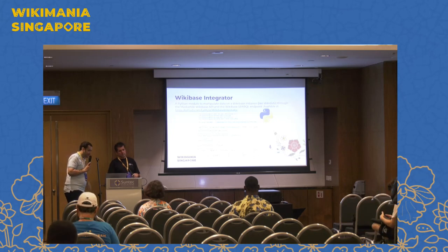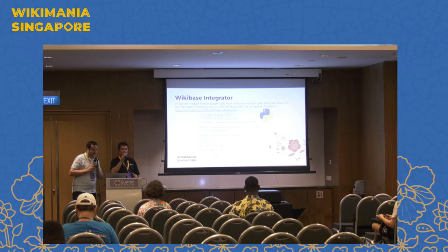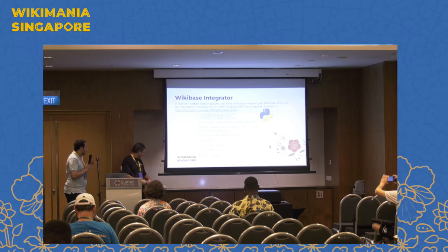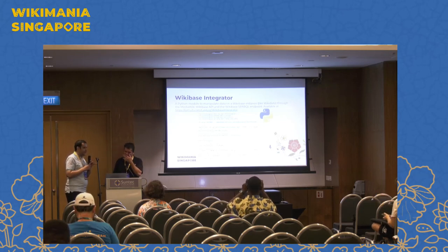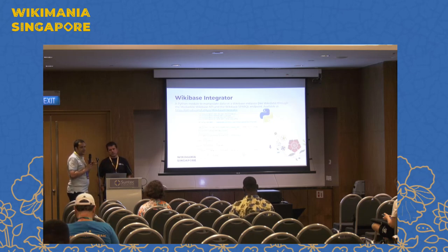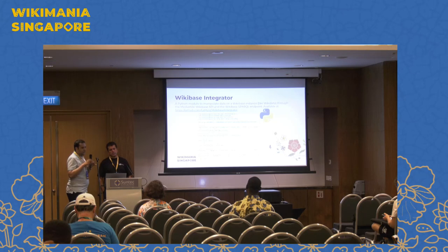The second tool is WikiBase Integrator, a very simple Python library to get information from Wikidata and add information to Wikidata. It was developed by Lemist a few years ago and is quite intuitive to write, by contrast to PyWikiBot which is very hard to handle. The process is simple: you provide the login and password, it generates the authorization token for you, and then you can write what you want to add or get in the form of triples.